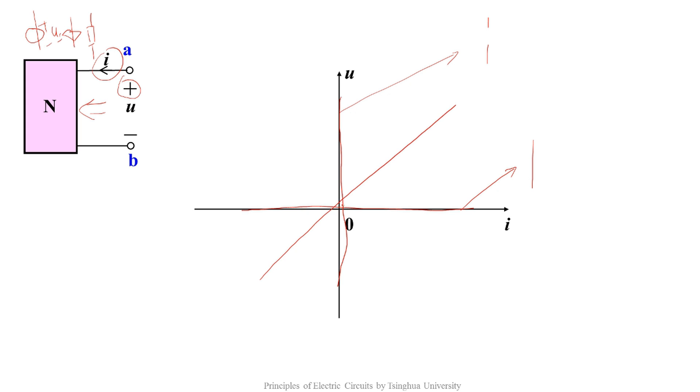A straight line across the origin point in the first and third quadrat represents a linear resistor. A straight line across the origin point in the second and fourth quadrat represents a negative resistor.